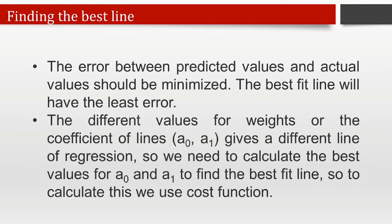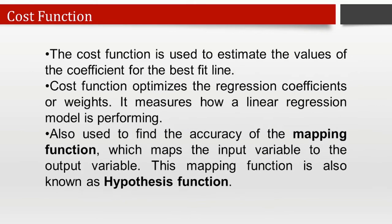To calculate this, we use the cost function. The cost function is used to estimate the value of the coefficients for the best fit line. The cost function optimizes the regression coefficients or weights and measures how a linear regression model is performing. We can use the cost function to find the accuracy of the mapping function, which maps the input variables to the output variables. This mapping function is also known as the hypothesis function.